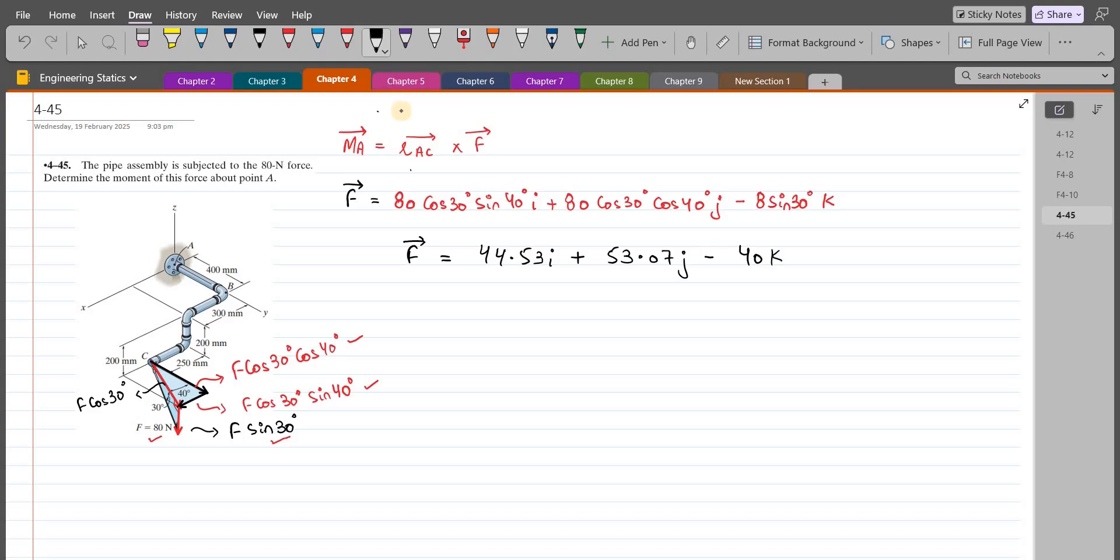Now we have to find the moment arm, which is the position vector R_AC. This is the position vector R_AC from point A, about which we have to calculate the moment, to point C, which lies on the line of action of force F. So we need the coordinates of point A and C. The coordinates of point A are 0, 0, 0 millimeters.